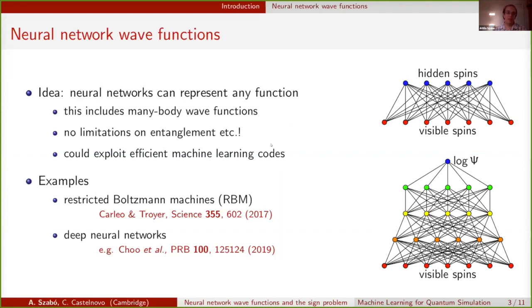Examples include the most famous example, the restricted Boltzmann machine of Carleo and Troyer. But based on that sort of background, deep neural network wave functions of various kinds have been proposed in the literature recently. What I will point out is that typically these neural networks are taken to represent the log of the wave function. We exponentiate the neural network to get a wave function in order to ensure product extensivity.